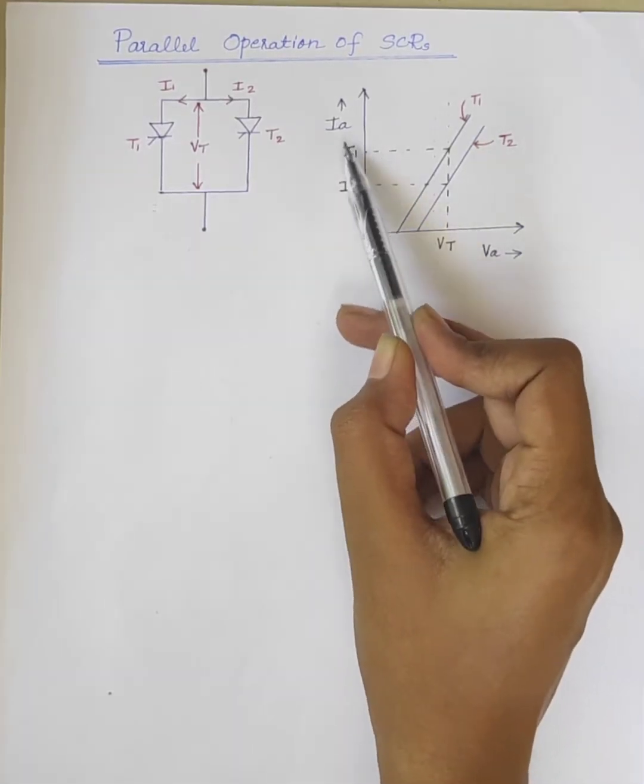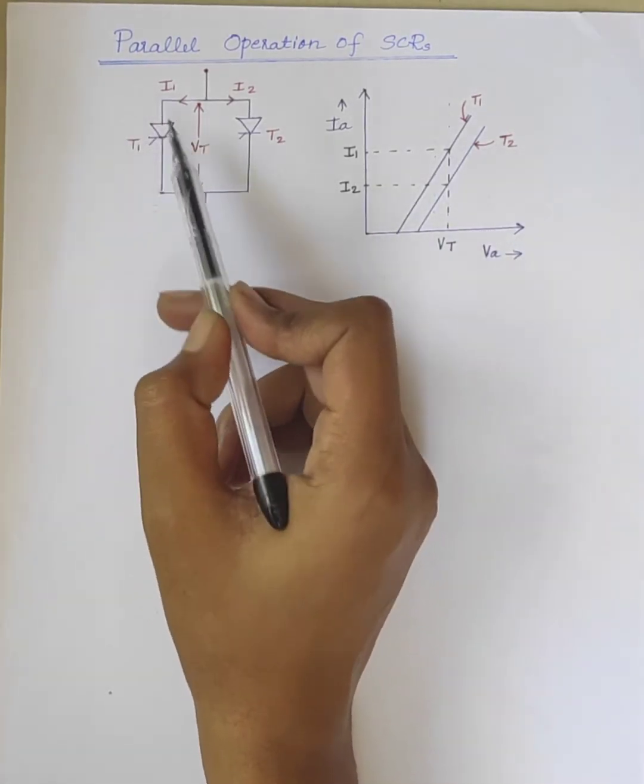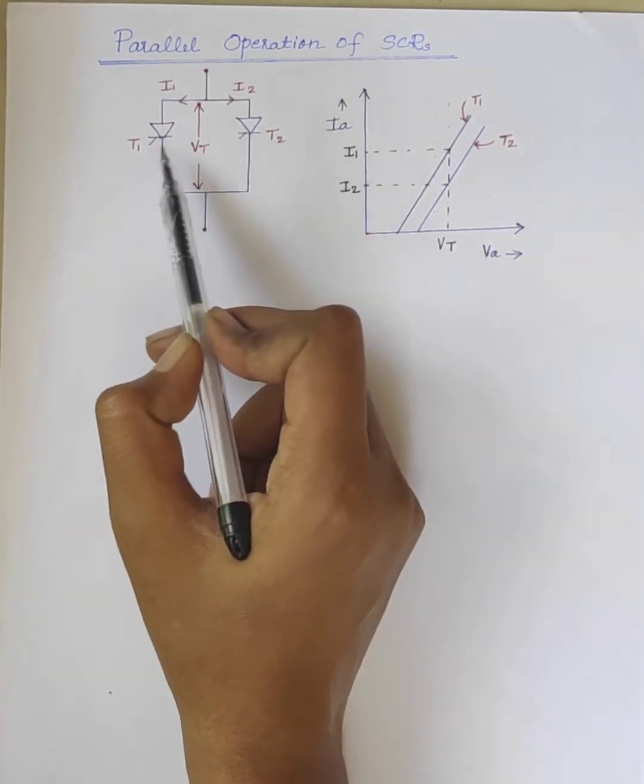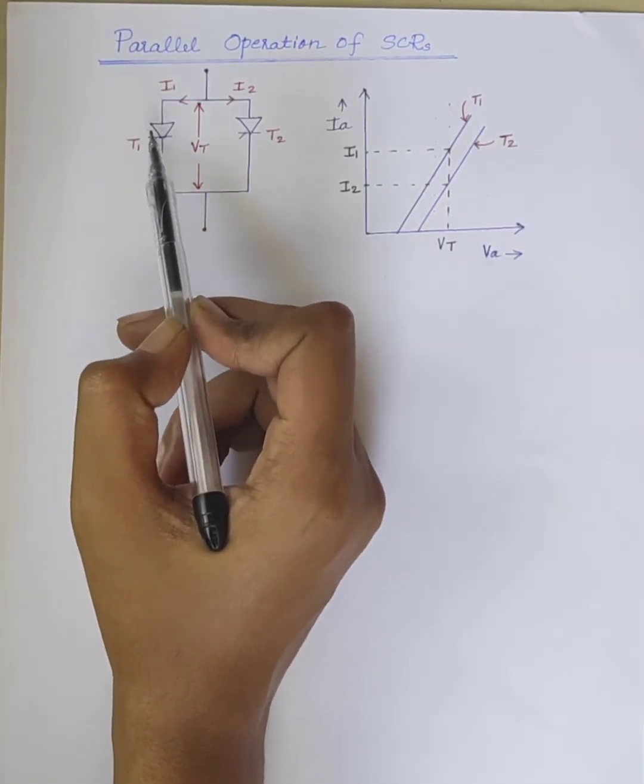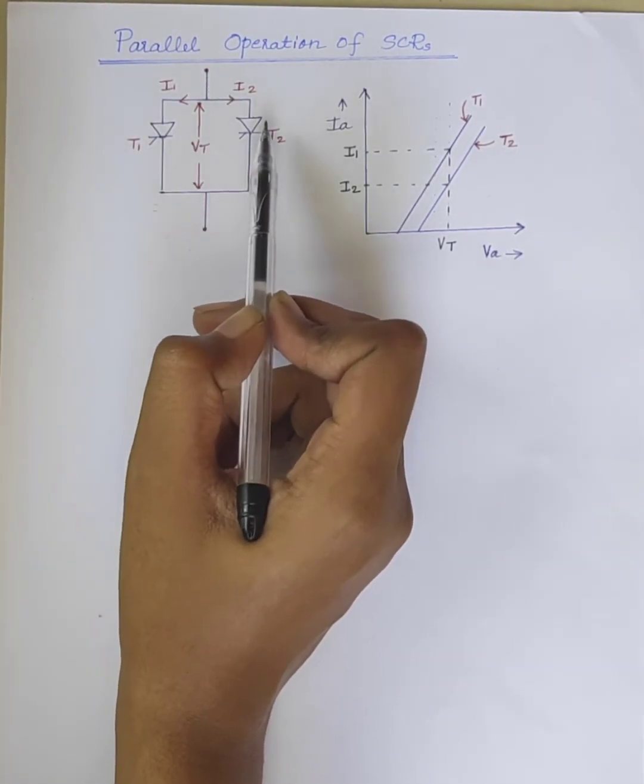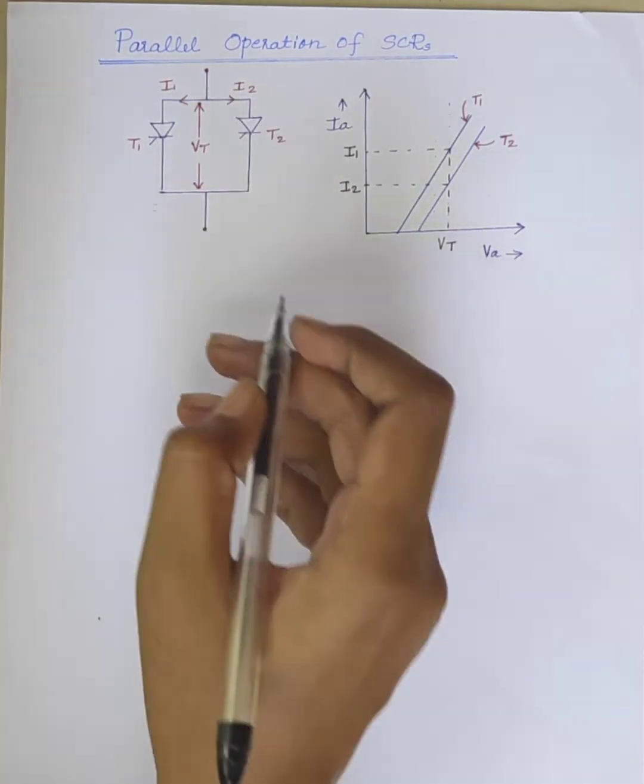I2 is small compared to I1. This means the current shared by the SCRs are not equal. T1 is carrying more current whereas T2 is carrying less current I2.